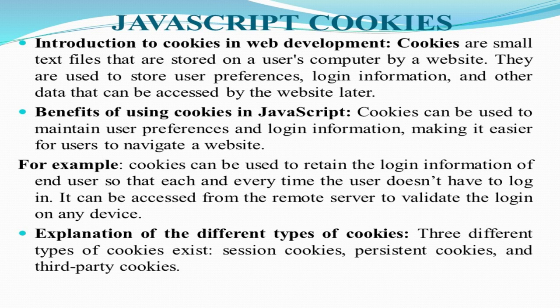Now what is the explanation of different types of cookies? There are three different types of cookies which exist. The first one is the session cookie, the second one is the persistent cookie, and the third one is the third-party cookie.